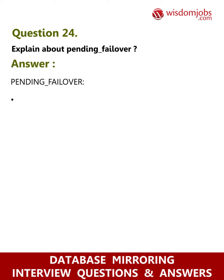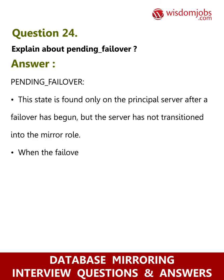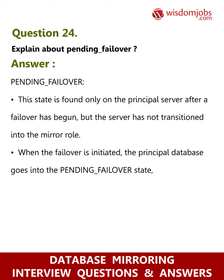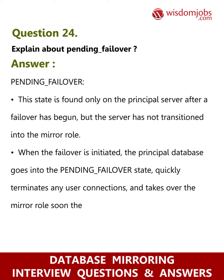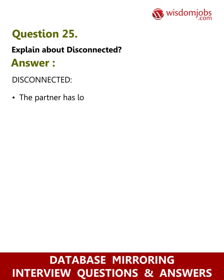Question 24: Explain the Pending_Failover state. Answer: This state is found only on the principal server after a failover has begun but the server has not yet transitioned into the mirror role. When failover is initiated, the principal database goes into the Pending_Failover state, quickly terminates any user connections, and takes over the mirror role soon thereafter. Question 25: Explain the Disconnected state. Answer: The partner has lost communication.